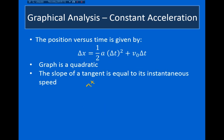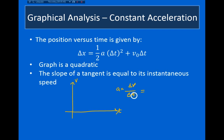One thing I didn't include on this slide: what happens if we plot the velocity versus time? Acceleration is change in velocity over change in time. If I plot velocity versus time, velocity is my y-axis and time is my x-axis. Change in velocity over change in time is change in y over change in x, which is slope. So if my acceleration is constant, the velocity versus time graph has a constant slope — it's a straight line — and the value of that slope tells me my acceleration.